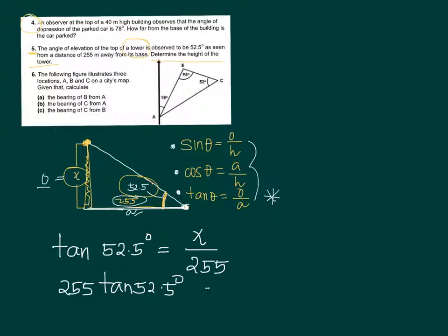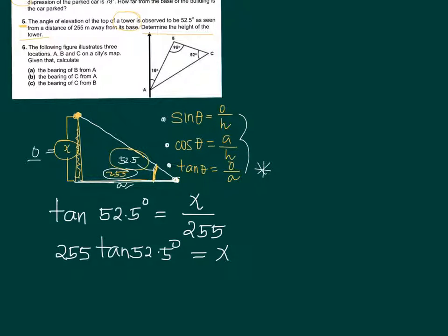If you have a calculator, all you have to do is type in 255 times tangent of 52.5, and you should get 332.32. So the value of X is 332.32 meters.